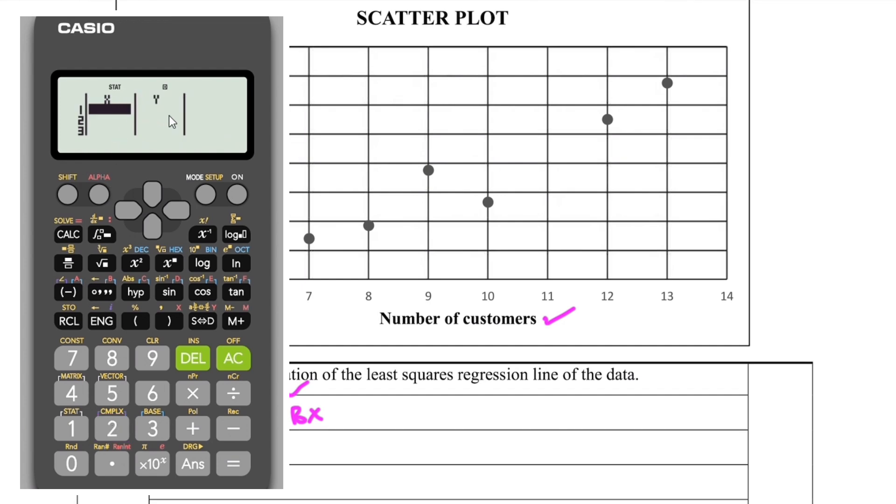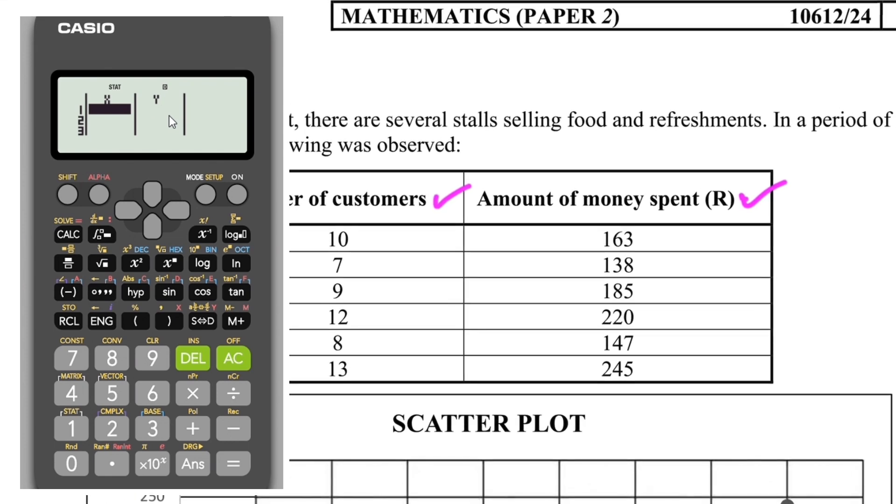I press two, and then you can see I have x and I have y. So I need to enter all the x values and their corresponding y values. We have 10, 7, 9, 12, 8, 13. I've entered my data. I'm just going to go through it once more to make sure that I've entered the correct data, because if you make a mistake when you enter the data, all your answers are going to be incorrect.